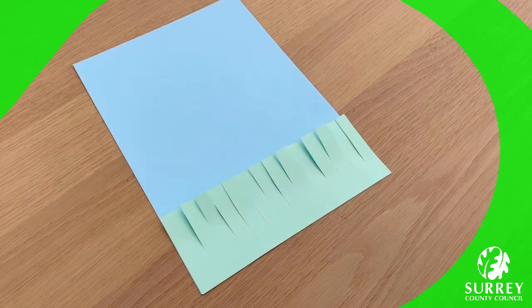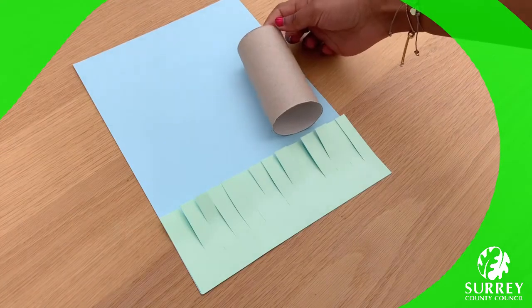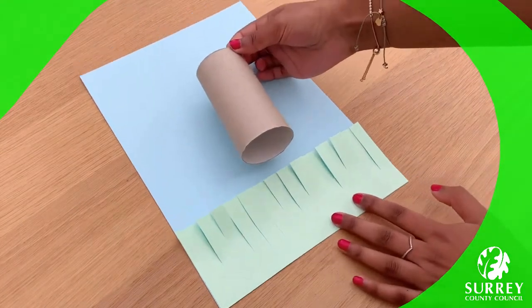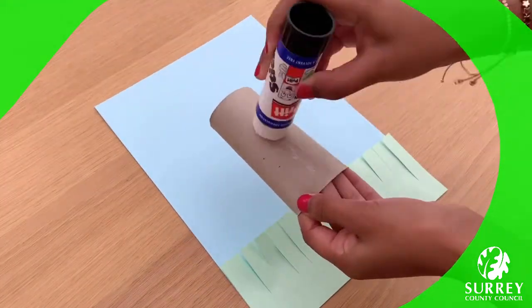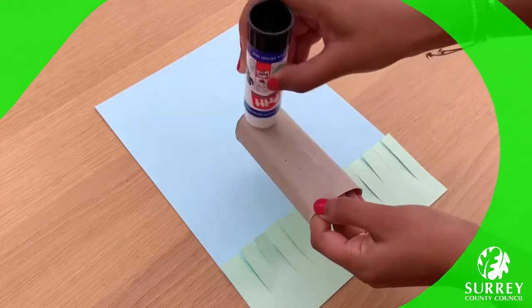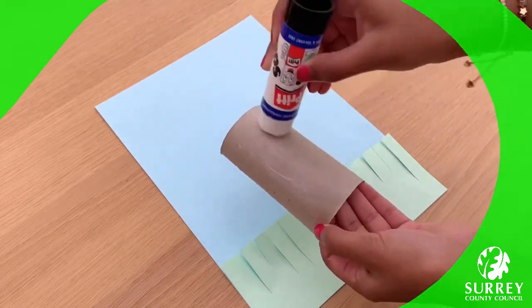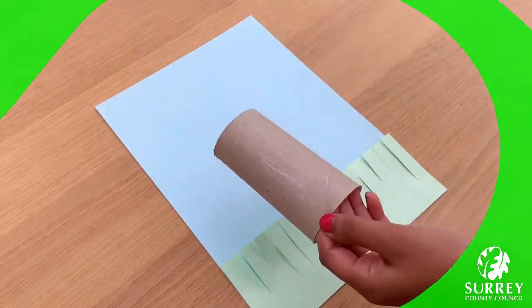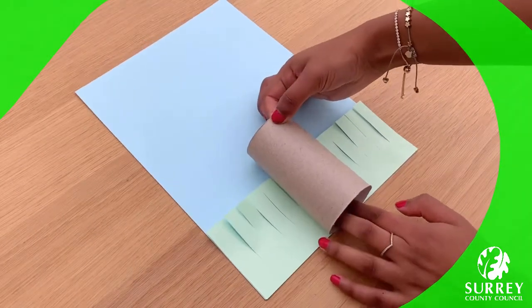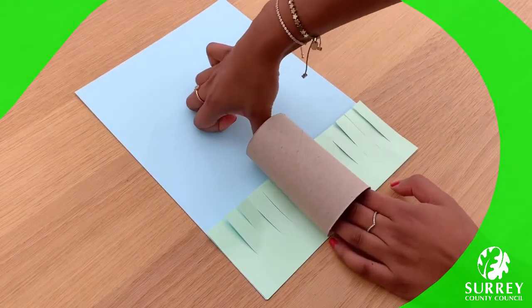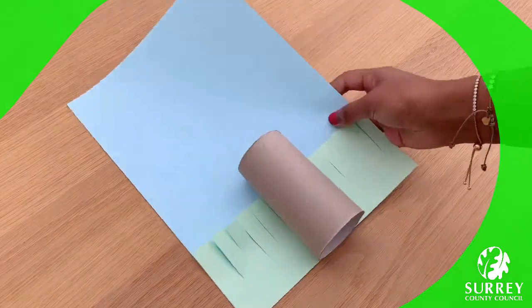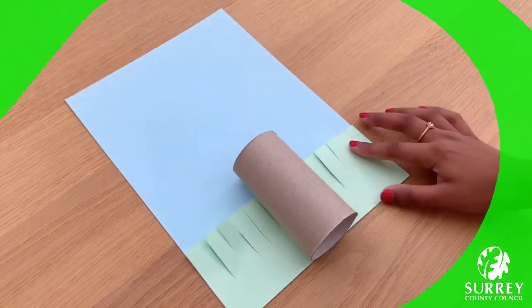Next, use your glue stick and glue the toilet paper roll onto the blue card. And push down. Excellent work everyone! Well done!